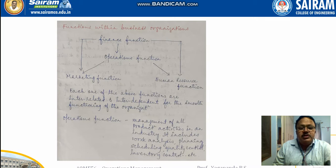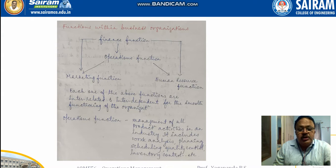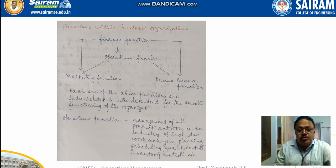The main functions within any business organization are: finance function, operations function, marketing function, and human resource function. Each of these functions is interrelated and interdependent on each other for the smooth functioning of that particular organization.